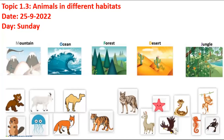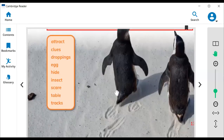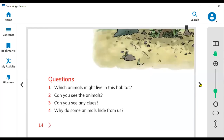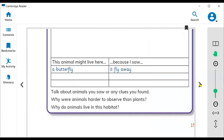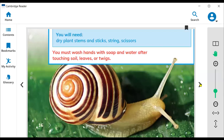Hello everyone, this is Bilal and this is the summary of today's class. In science we started from topic 1.3 — Animals in Different Habitats. You can see this topic on your science learners group, pages 13, 14, 15, and 16.